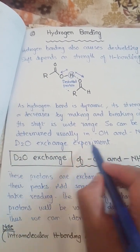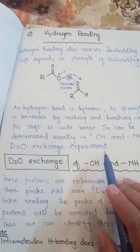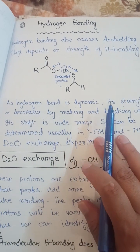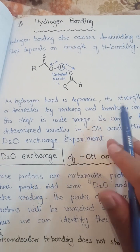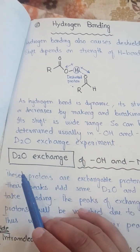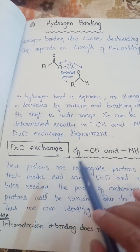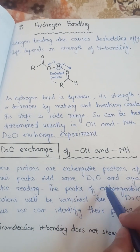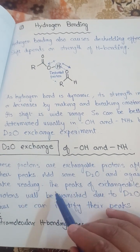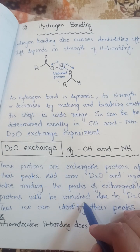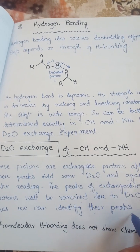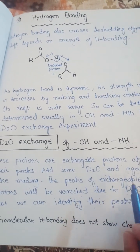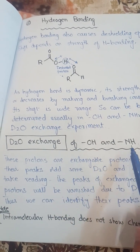Now we are going to discuss what is the D2O exchange experiment or deuterium oxide exchange experiment. This experiment is used to determine whether the NMR peak obtained is of a hydroxyl proton, NH2 proton, or some other protons, because these can be exchangeable with D2O. These protons are exchangeable protons. After their peaks are obtained in the NMR spectrum, add some D2O — deuterium oxide — and again take the reading. The peaks of the exchangeable protons will disappear or vanish due to deuterium oxide. Thus we can identify the peaks of these protons. Before and after adding D2O, the difference in the peaks will represent the peaks of these OH and NH protons.